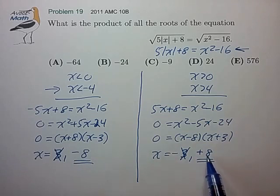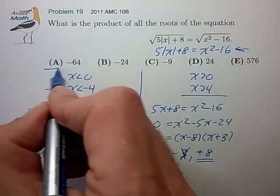So in total, we have two roots, plus 8 and minus 8, the product of which is minus 64 for answer A.